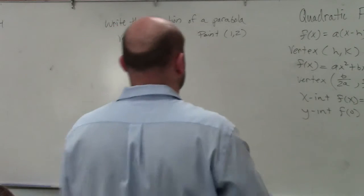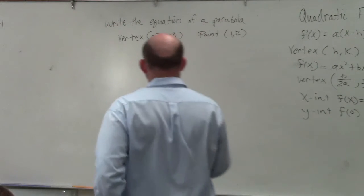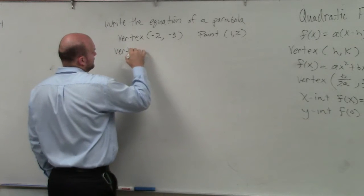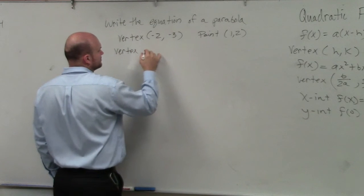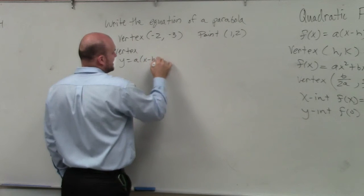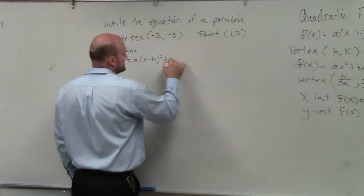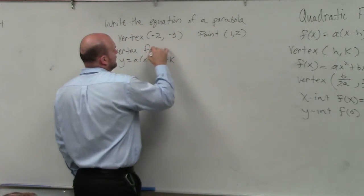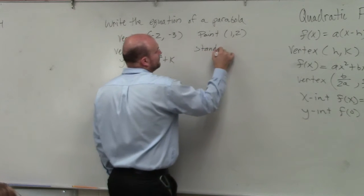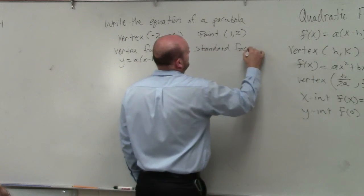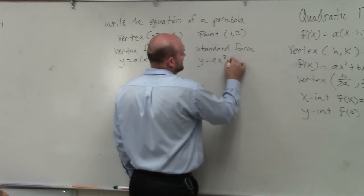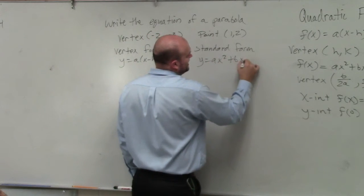There are two formulas we've talked about for quadratic functions. We have vertex form, which is y equals a times x minus h squared plus k. And we have standard form, which is y equals a times x squared plus bx plus c.